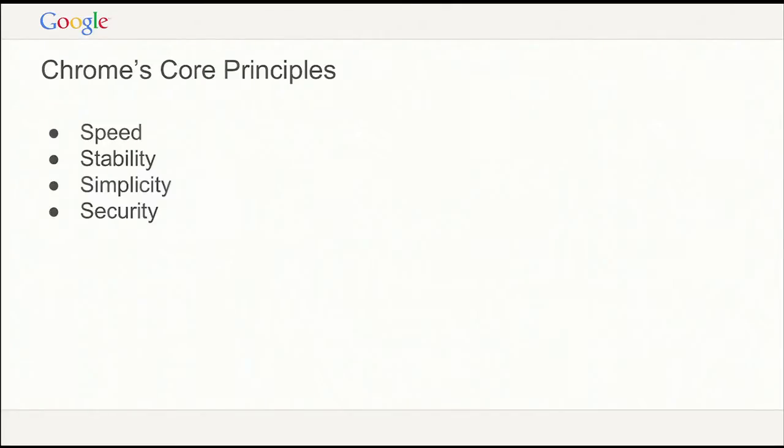Chrome has been built around core principles — the four S's we call them: Speed, Stability, Simplicity, and Security. Speed — you want a browser to be fast. Stability — we don't want a browser to crash. Simplicity — most people don't really care about browsers; they just want to see web pages. Security — we want to make sure that people trust the browser for things like online banking and buying stuff online.